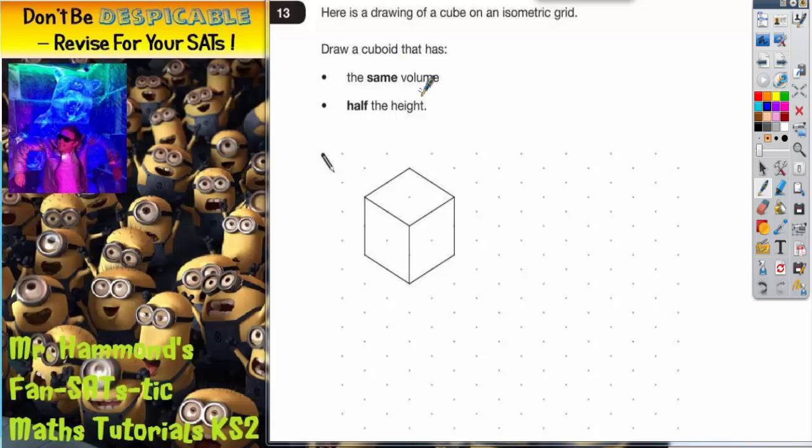Since we're talking about cuboids, we need to refresh our memory for the formula. The volume of a cuboid is length times width times height.